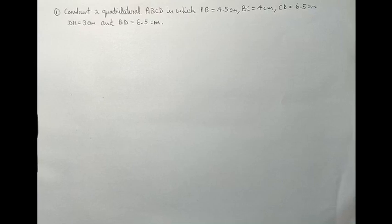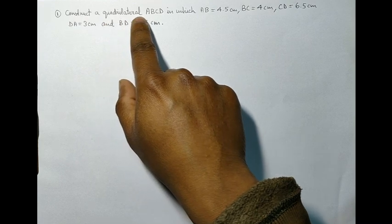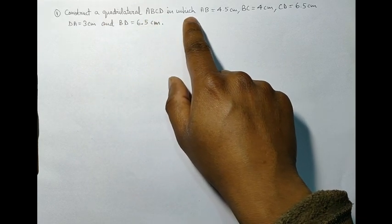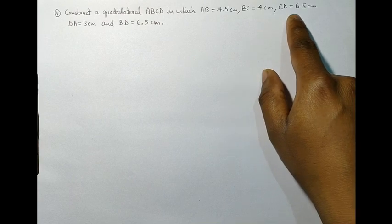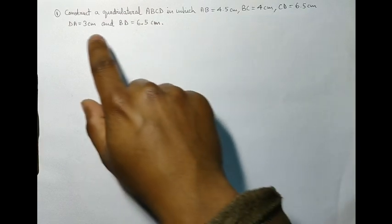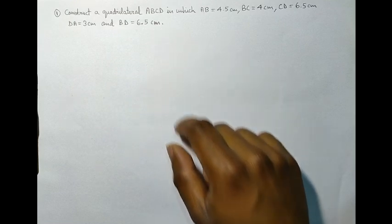In this video, we will learn about the construction of quadrilaterals. Construct a quadrilateral ABCD in which AB is equal to 4.5 cm, BC is equal to 4 cm, CD is equal to 6.5 cm, DA is equal to 3 cm and BD is equal to 6.5 cm.